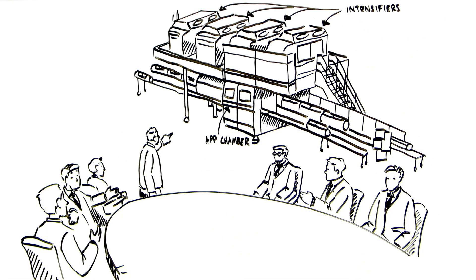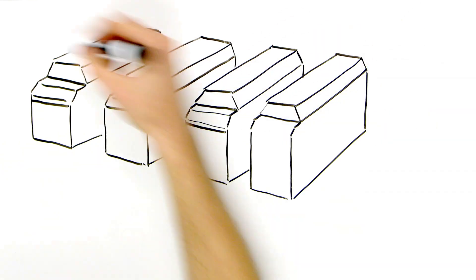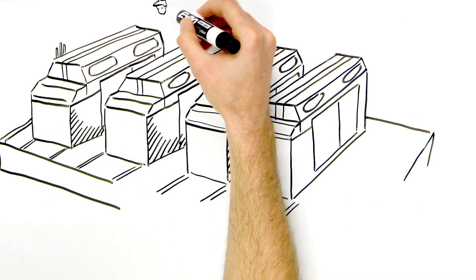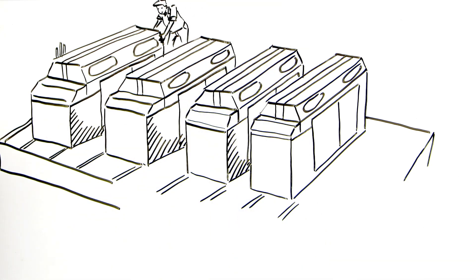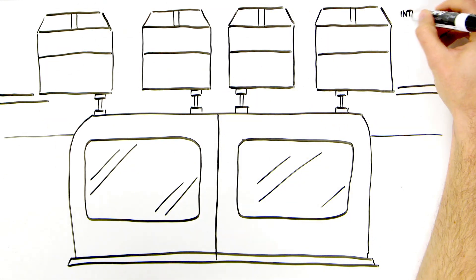Hyperbaric developed a horizontal machine to load product on one side and unload it on the other. We also developed a state-of-the-art independent intensifier concept that allows the operator to stop one intensifier for maintenance while continuing to run on the other. Our design integrated intensifiers on the top of the machine to save space and shorten high-pressure lines.